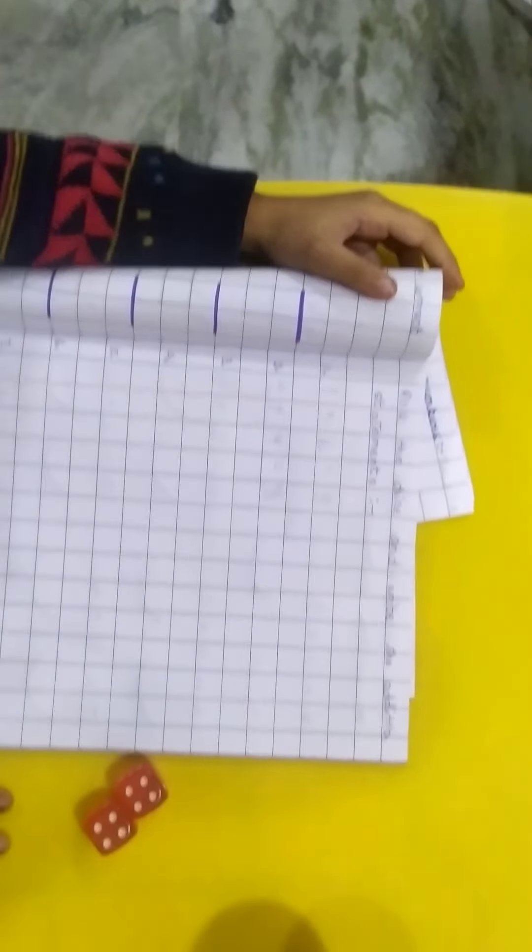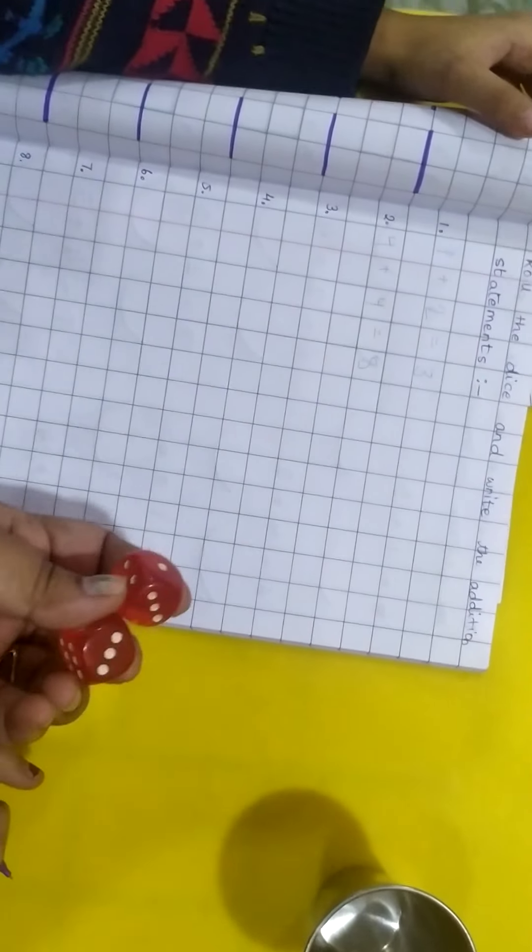Yeah, okay. So this is the way in which the child will keep on rolling the dice and do the addition statement.